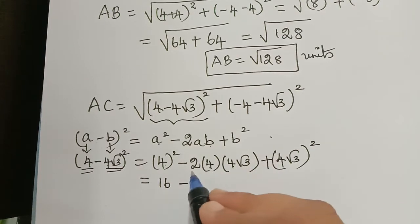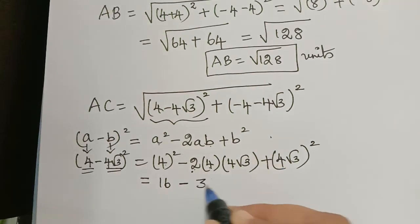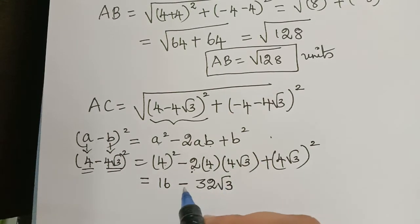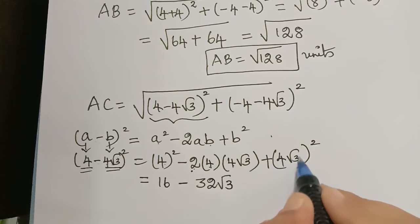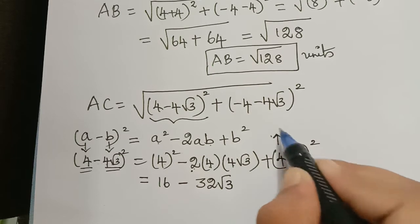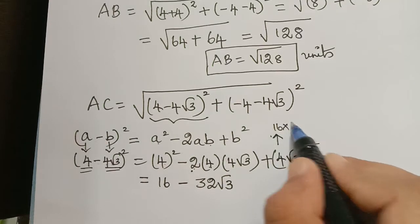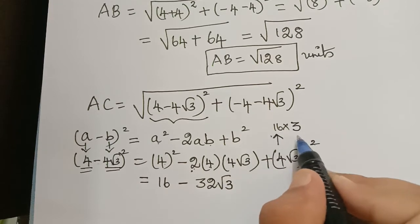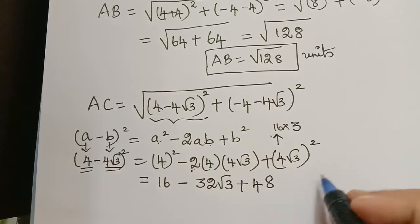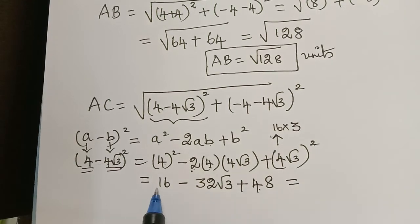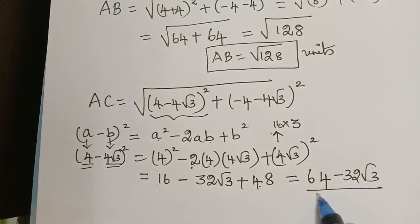Continuing: 4² = 16, then 2 × 4 × 4 = 32, so the middle term is -32√3. For the last term, (4√3)² = 4² × (√3)² = 16 × 3 = 48. So (4 - 4√3)² = 16 - 32√3 + 48 = 64 - 32√3.